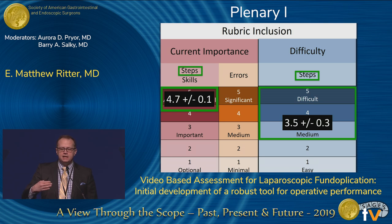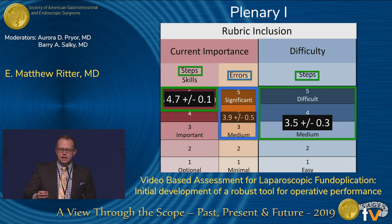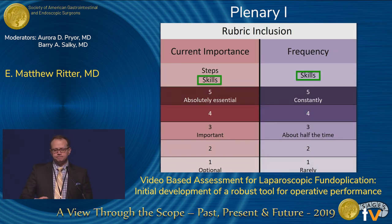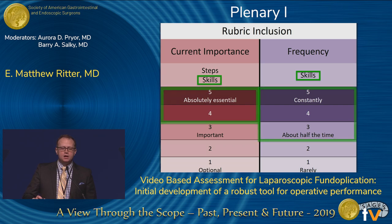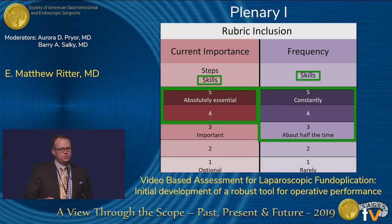You can see the means of items that made the final cut. For errors, we wanted to be relatively inclusive — anything above a minimal level was included. For skills, we included highly important or essential skills used at least half the time. This all speaks to construct-irrelevant variance: we wanted everything on the tool to have a high level of relevance to performing fundoplication.